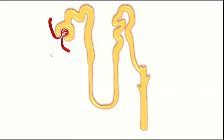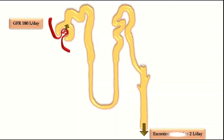There are millions of nephrons in both kidneys and the glomerular filtrate produced by all nephrons of both kidneys is about 180 liters per day. Is all of this filtrate being excreted? No — only about 0.82 liters of the total glomerular filtrate is excreted from the body. So what happens to the rest? Almost 99 percent of the filtrate is reabsorbed by different parts of the nephrons, and only 0.82 liters is excreted per day.